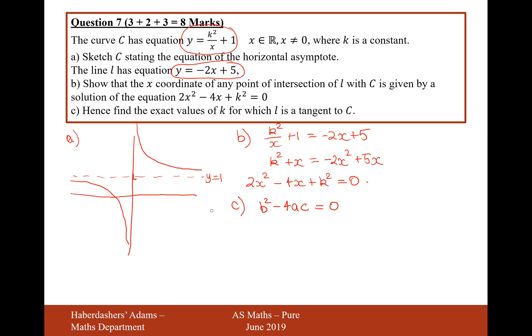If you've got two intersections of the curve, it'll be greater than 0. If you've got just no intersections, it'll be less than 0. But in this case, b squared minus 4ac is equal to 0. So in this question here, b is minus 4, a is 2, and c is k squared.